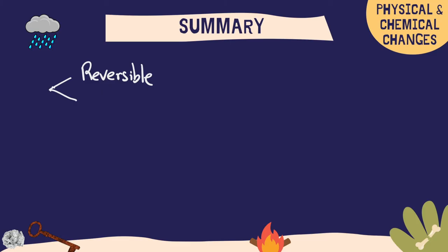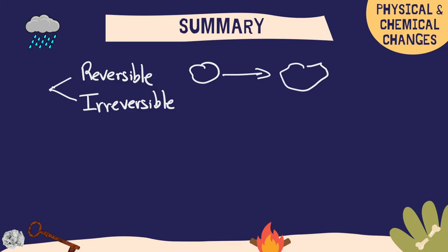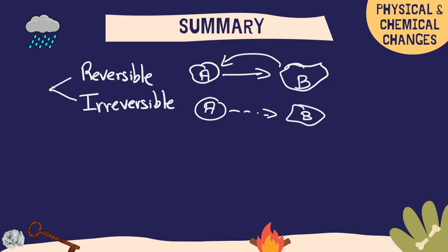In summary, changes can be reversible or irreversible. With a reversible change, we have one object, it undergoes a change and becomes a new form, but we can go back to the first state. With an irreversible change, it is impossible to go back once we have the result of the reaction.